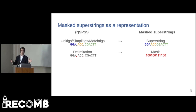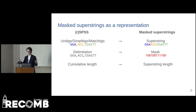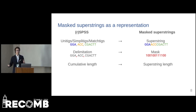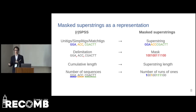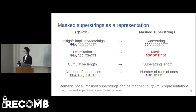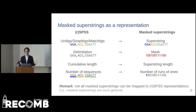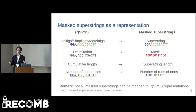Other objectives from the SPSS representations translate very naturally to masked superstrings. The cumulative length becomes the superstring length, and the number of sequences becomes the number of runs of consecutive ones in the mask. Note, however, that not all masked superstrings have their corresponding SPSS representations. Thus, masked superstrings not only unify the previous representations — they generalize them.